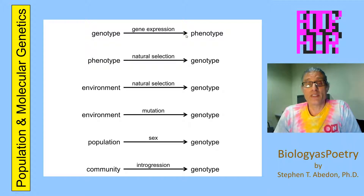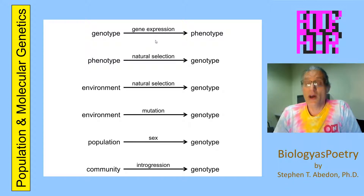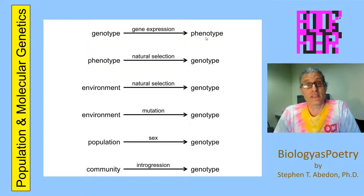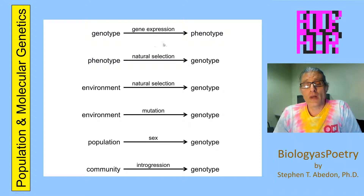Genotype via gene expression gives rise to phenotype. Gene expression involves a combination of transcription and also typically translation as well. The resulting polypeptides form into proteins, and then the proteins are responsible for the most part for effecting what phenotype an organism has. This is a one-way process going from genotype to phenotype; for the most part, phenotype doesn't impact on genotype.